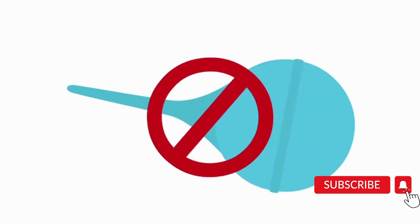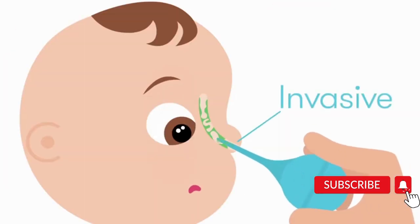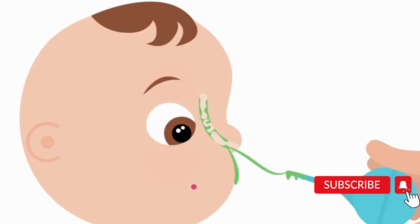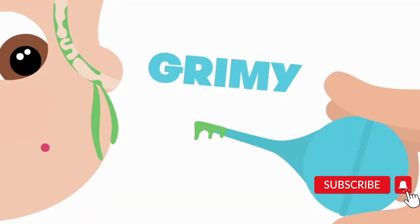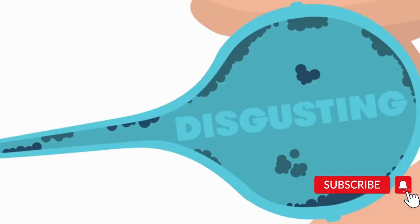But it's snot easy with that outdated bulb syringe. They're invasive, but worse, they're near impossible to clean. So they're grimy, slimy, and downright disgusting inside.